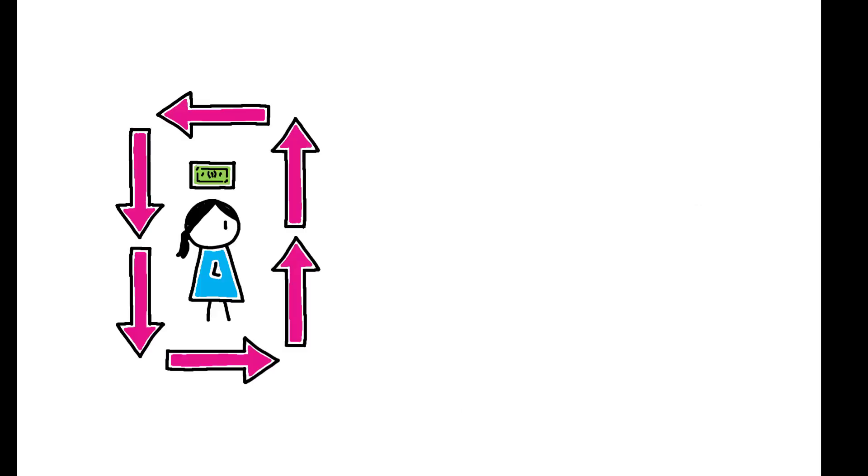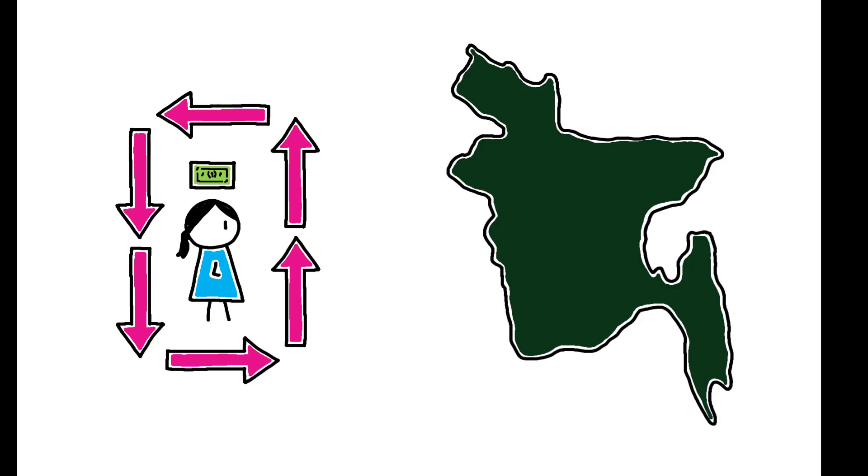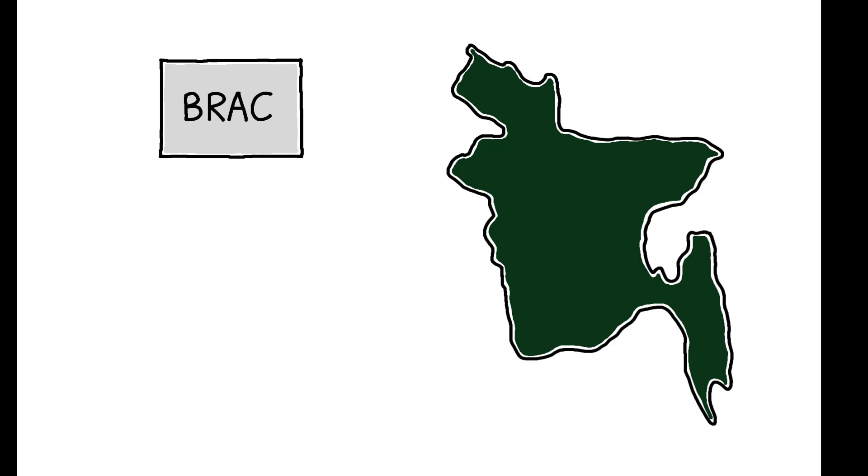This paper tests for the existence of poverty traps by studying a large, randomized asset transfer program in rural Bangladesh. BRAC's Targeting the Ultra-poor program offers households a one-off transfer of productive assets, most commonly a cow, with the goal of creating a source of regular earnings for poor women.